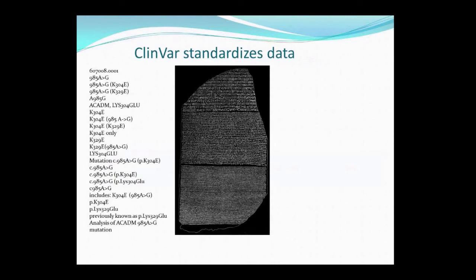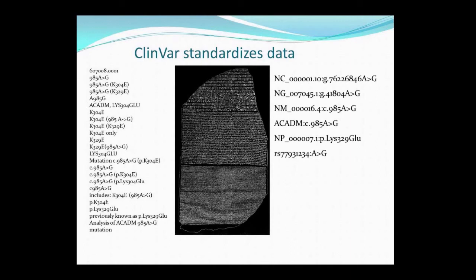Another function of ClinVar is to provide standardization of data. Genes and phenotypes can have many different names, making it difficult to determine what people are talking about. ClinVar provides standardization of these names on different scales, such as chromosome level and protein level, so that users can explicitly identify which variant each is referring to. ClinVar provides HGVS expressions in genomic coordinates, cDNA coordinates, protein coordinates, as well as dbSNP identifiers.